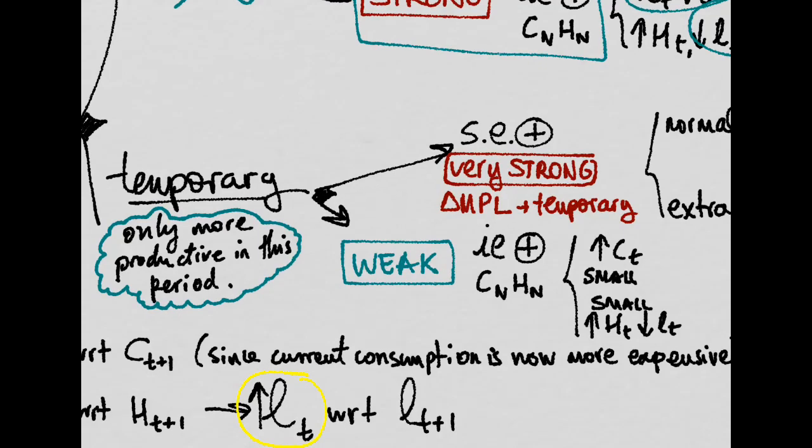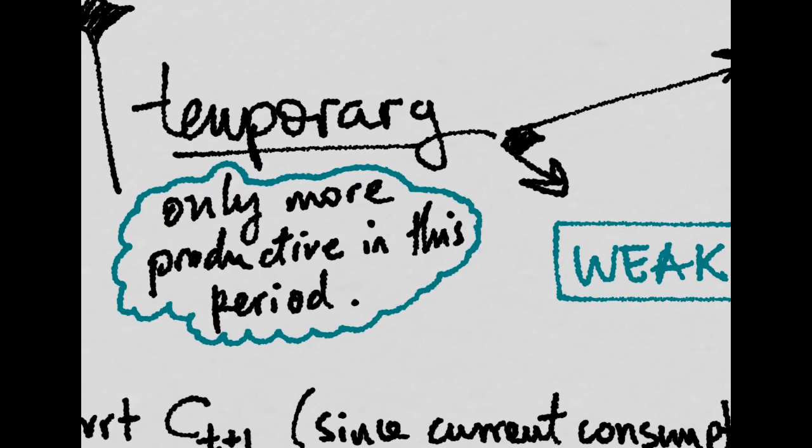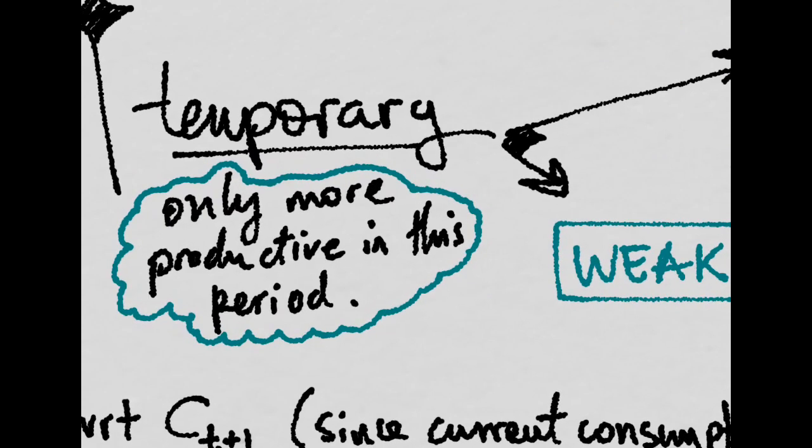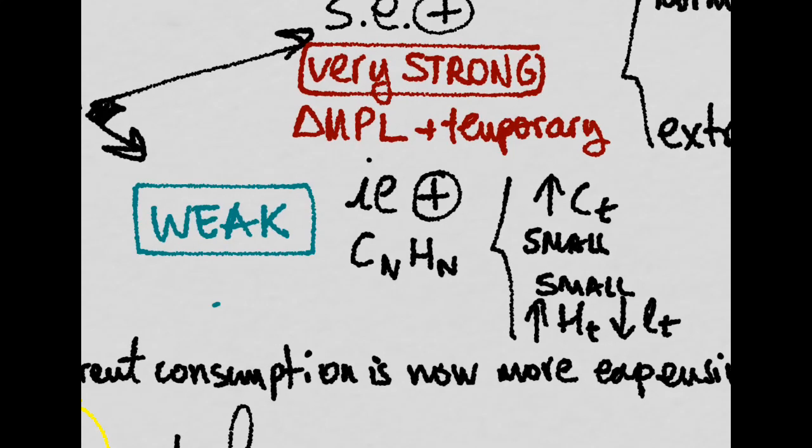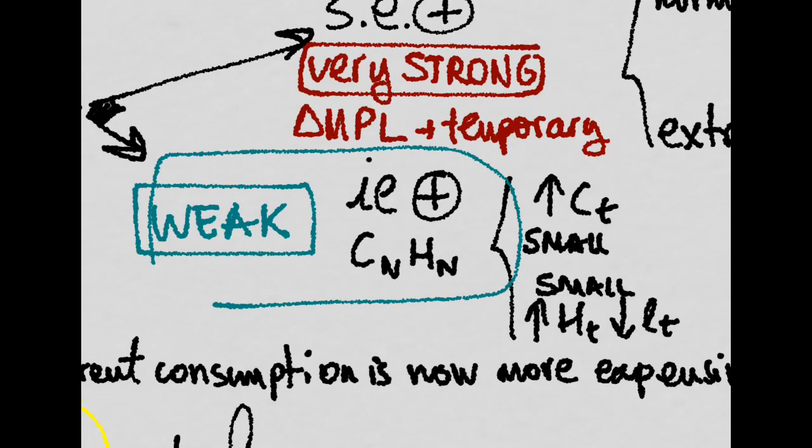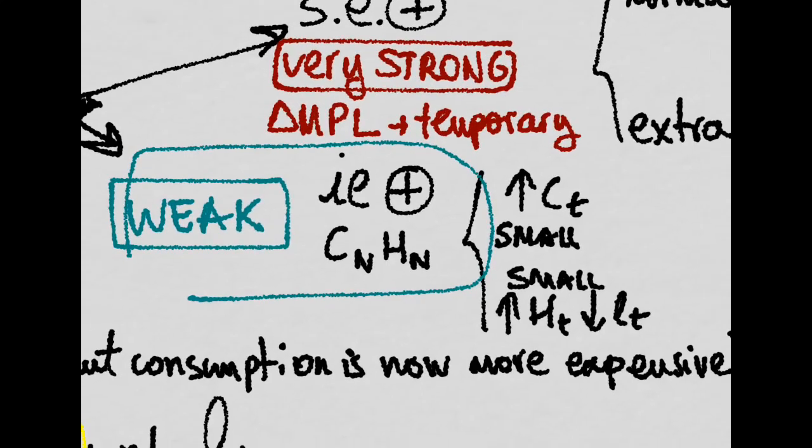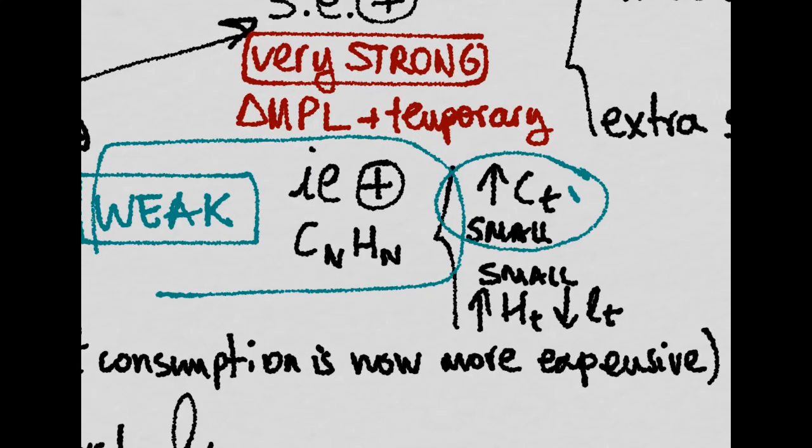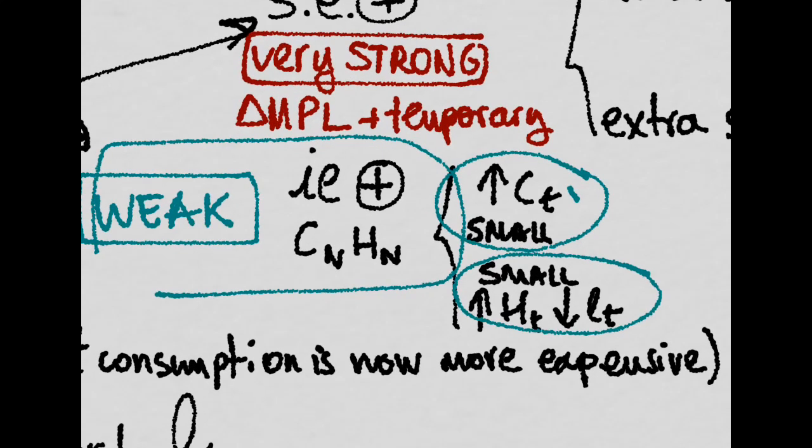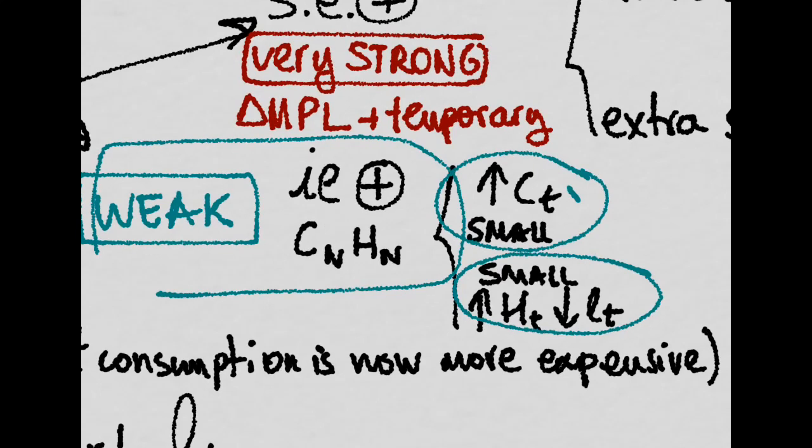Instead, if the shock was temporary, you will only have more productivity in this period. So you have a very weak income effect, and assuming that consumption is normal and leisure is normal, you will have a small increase in consumption in this period and a small decrease in labor at this period also.